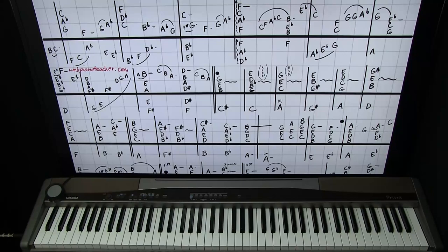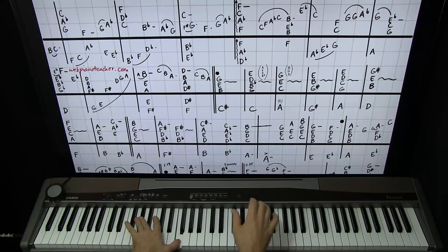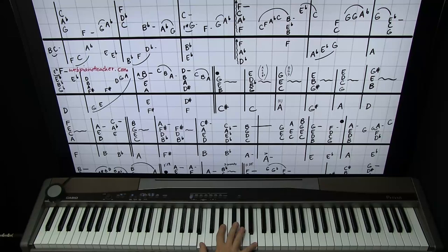Now we're going to have F, A flat, C, F. It's arpeggiated upward, that's my little curvy arrow there. Left hand, D flat, A flat, F. That's also rolled. Roll it all together. It's a D flat major 7th chord is what it's called. And then that's going to be C, F, A flat, C, 1, 2, 3, 5. Fast.